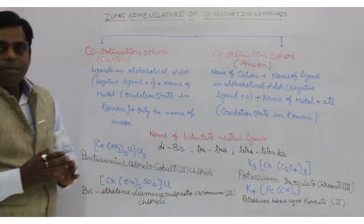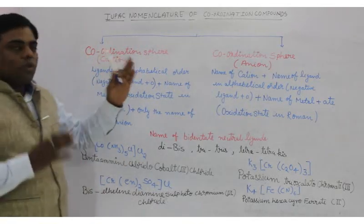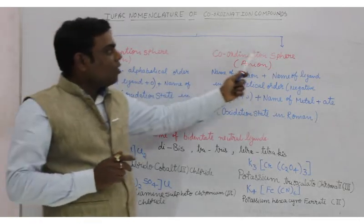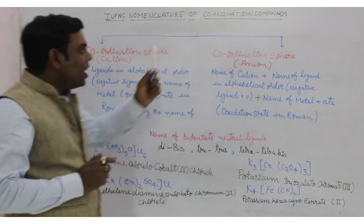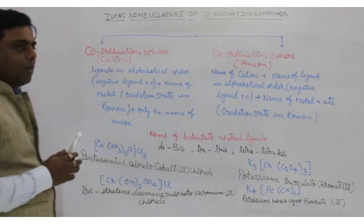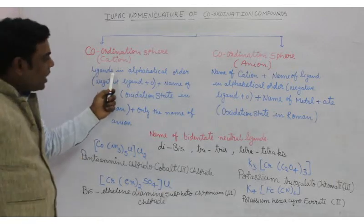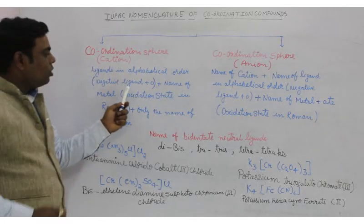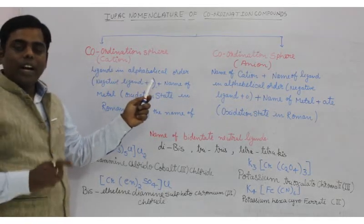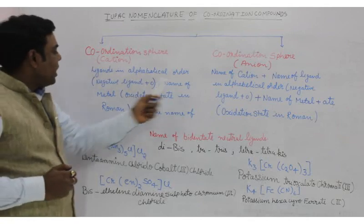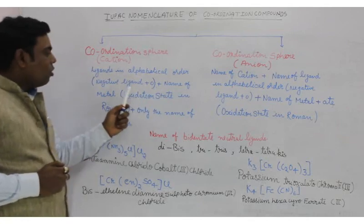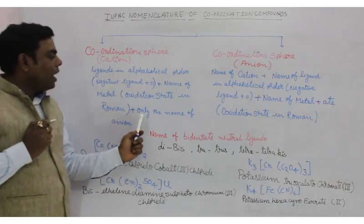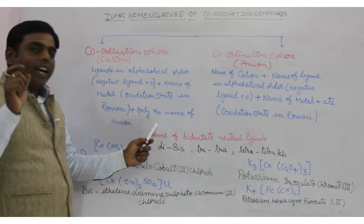For coordination compounds, when naming the coordination sphere, first you write the name of the ligands in alphabetical order. For negative ligands, you add 'O' at the end — for example, chloride becomes chloro and sulphate becomes sulphato. After that you write the name of the metal, with the oxidation state written in Roman numerals in brackets, followed by the name of the outer anion.